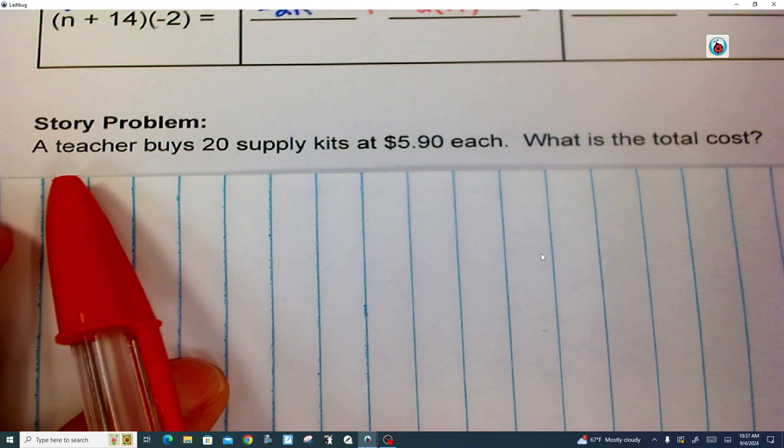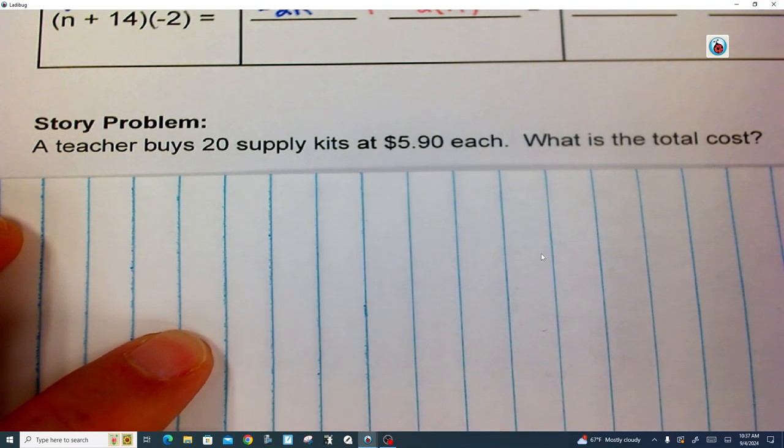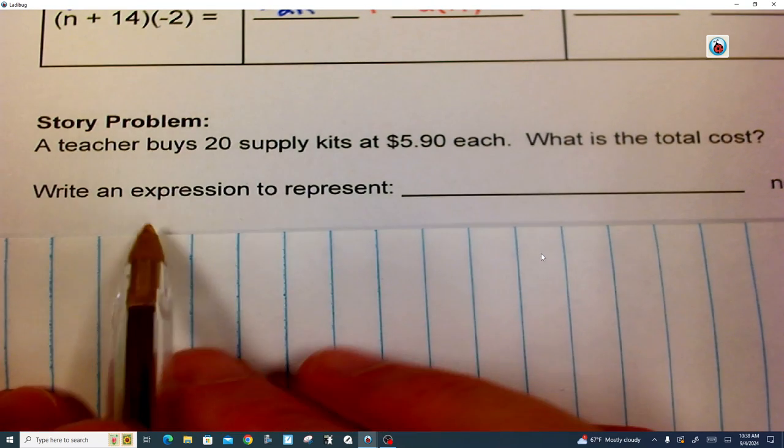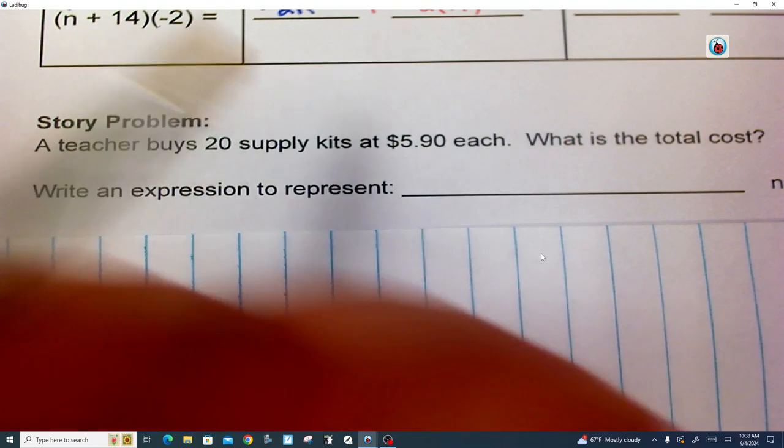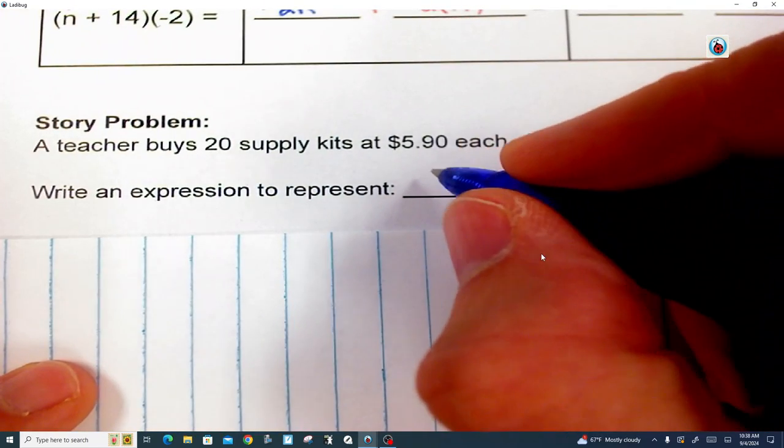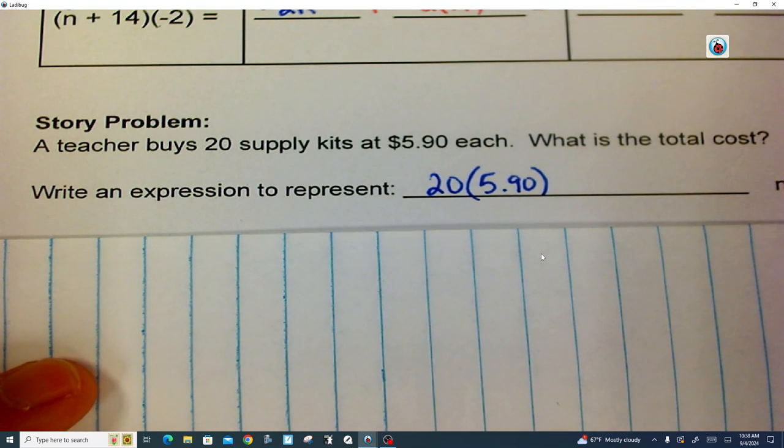You will also have a couple of questions that's like this. A teacher buys 20 supply kits at $5.90 each. Now it's just asking you total cost. What would you do if you were at Walmart and you had to go buy these for the teacher? They gave you cash. And you had to prove how much you paid for it. Hopefully you'd have the receipt. But what would you do with the 20 and the $5.90 each? If you've got to buy 20 of them, what are you going to do? Add, subtract, multiply, or divide? You'd absolutely multiply. And so it says write an expression. Now it doesn't say algebraic, does it? It just says an expression. Well that's just numbers doing math. So how about we take the 20 and write it right there? And put in parentheses the $5.90. Isn't that showing that it's multiplying?